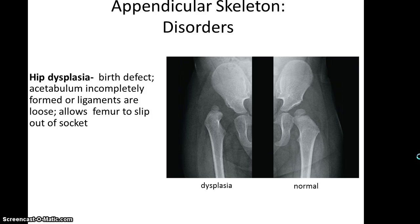Hip dysplasia is a birth defect which basically means that the acetabulum does not completely form, or the ligaments that attach the femur to the acetabulum aren't firm enough and are kind of loose. This allows the femur to slip out of the socket, but this can normally be corrected with surgery.